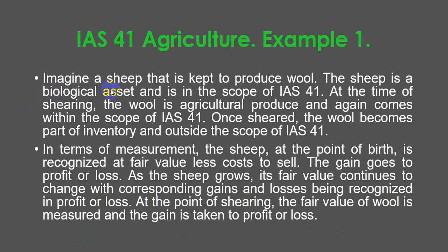Let's look at several examples. Imagine a sheep that is kept to produce food. The sheep is a biological asset and is in the scope of IAS 41. At the time of shearing, the wool is agricultural produce and again comes within the scope of IAS 41. Once sheared, the wool becomes part of inventory and is outside the scope of IAS 41.